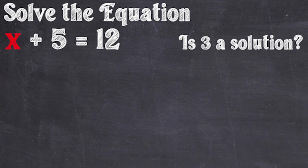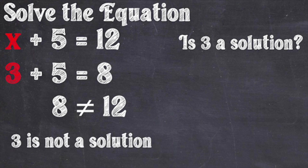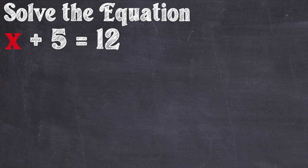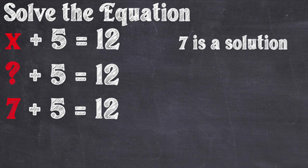Is 3 a solution? If we replace x with 3 in the left-hand side of the equation, we get 3 plus 5, which is 8. This is a problem because the right-hand side is 12. 8 is not equal to 12, so 3 is not a solution. We can think about the problem differently: solving x plus 5 equals 12 is the same as asking what plus 5 equals 12. Remembering our math facts, we know that 7 plus 5 is 12, so replacing x with 7 gives us a solution. Thus, x equals 7.